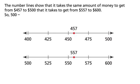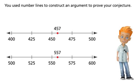So, 500 minus 457 equals 600 minus 557. My conjecture is correct. You used number lines to construct an argument to prove your conjecture.